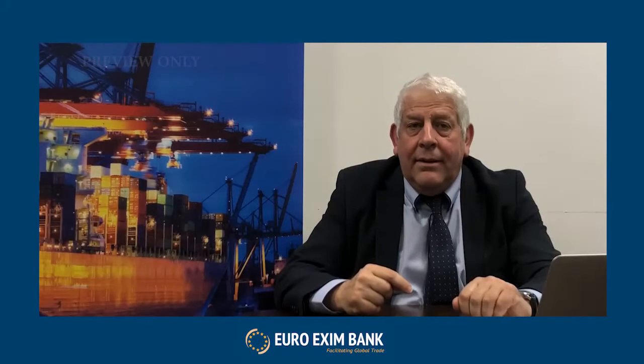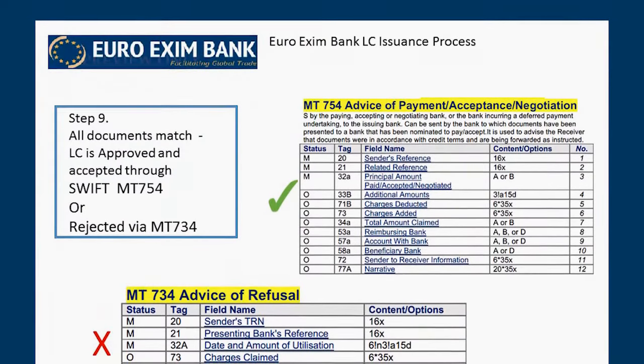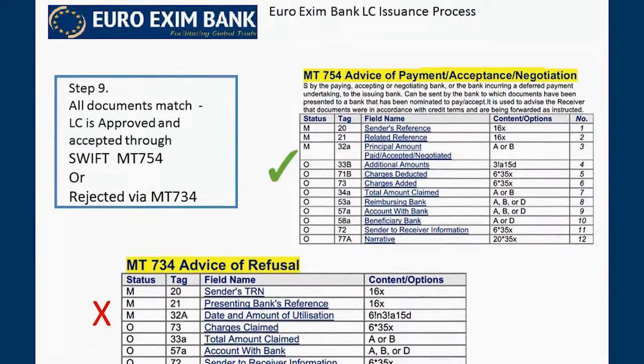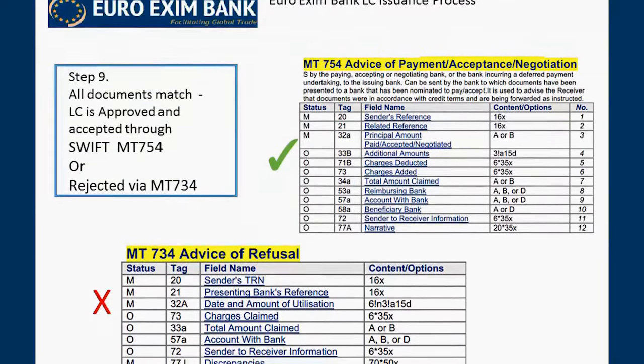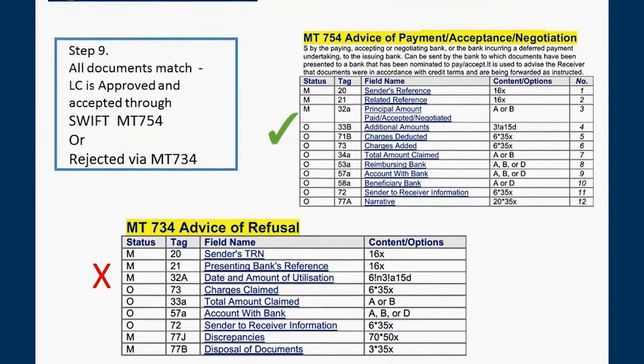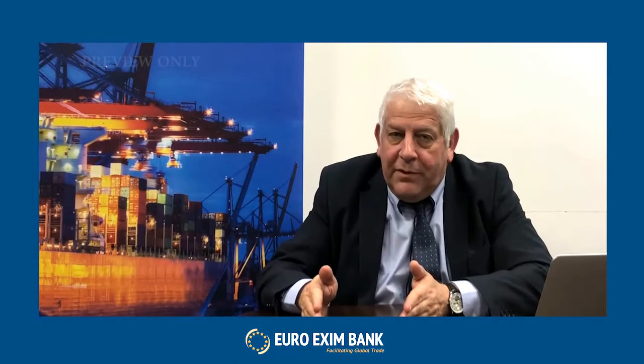Step nine: if all the documents are correct and there are no discrepancies, we will issue an MT754 acceptance of the terms and conditions of that particular LC. On the other hand, if it does not pass all of our checks, we will issue an MT734 rejection notice. We have to be absolutely clear that all terms and conditions are abided by, and the two message types — MT754 accept or MT734 advice of refusal — are absolutely clear in their message to the counterparty.